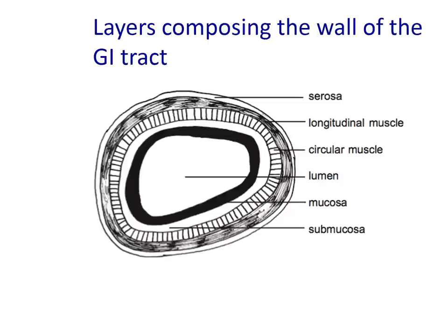To consider the structure of the gastrointestinal tract, it's useful to think about a cross-section of the layers. The walls of all components of the GI tract from the esophagus to the rectum have the same basic layered structure. The lumen is surrounded by a mucosa, submucosa, a muscular layer, and an outer serosa or adventitia.